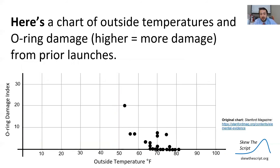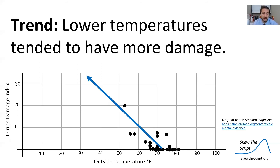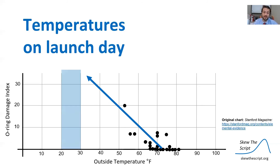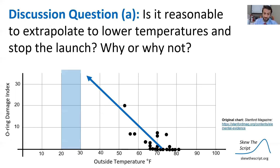Here is a chart of outside temperatures on the x-axis and O-ring damage on the y-axis — higher values mean more damage, so we want that to be low. This data is from prior launches of the Challenger; each dot represents one launch, and we see a clear trend: lower temperatures tend to correlate with more damage on the O-rings. However, the temperatures on launch day were between 20 and 30 degrees Fahrenheit — this range is outside of our sample, outside of our domain. It's extrapolation. The discussion question is: is it responsible to extrapolate to lower temperatures and stop the launch? Why or why not?